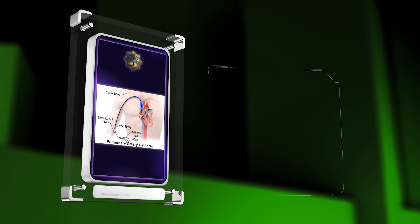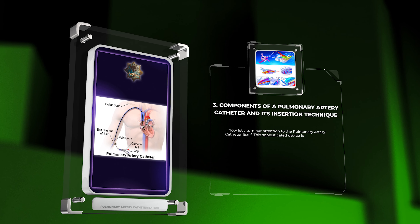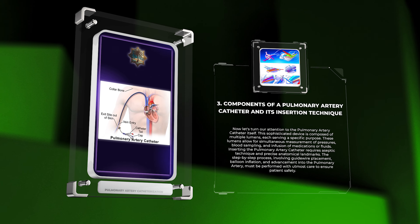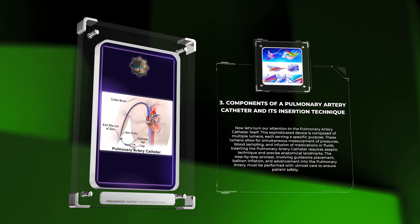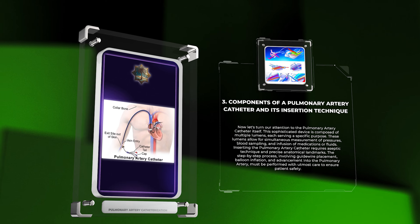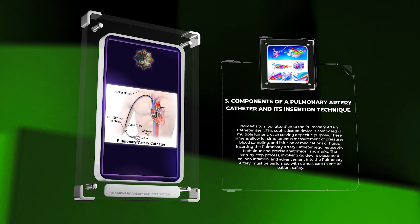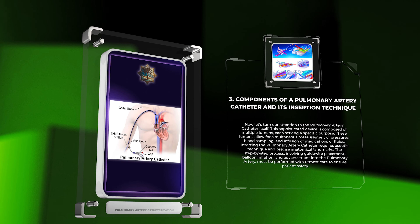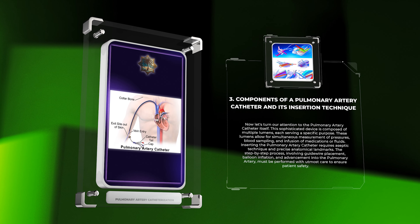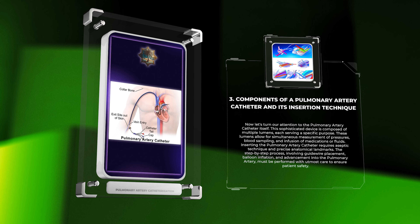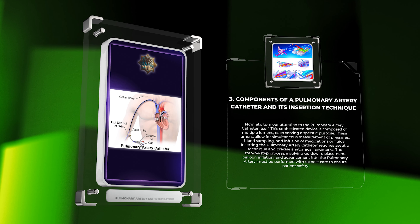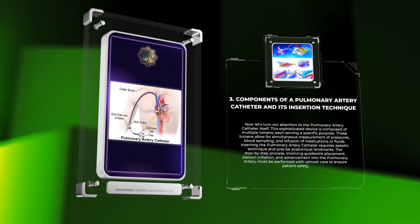Now let's turn our attention to the pulmonary artery catheter itself. This sophisticated device is composed of multiple lumens, each serving a specific purpose. These lumens allow for simultaneous measurement of pressures, blood sampling, and infusion of medications or fluids.